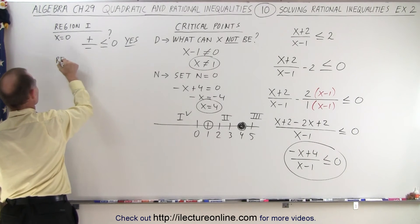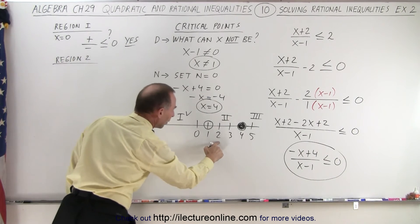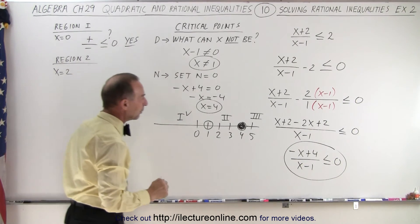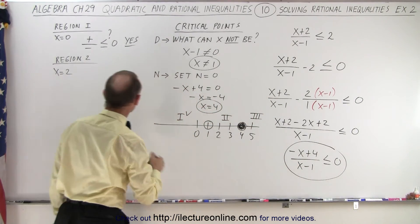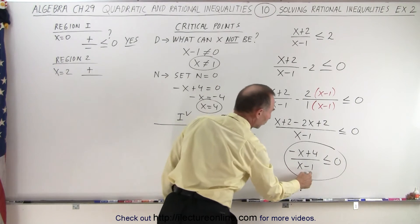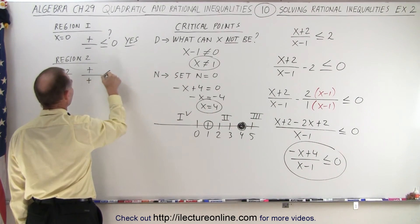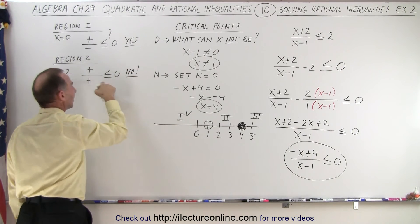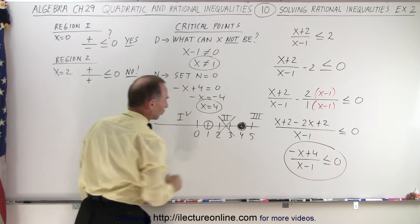For region two, let x equal two. We have negative two plus four, which is still a positive number — the numerator is positive. The denominator is two minus one, which equals one, also positive. A positive number is not less than or equal to zero, so region two is not part of the solution.